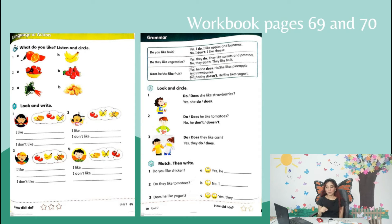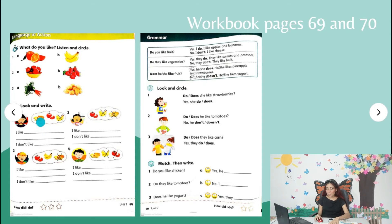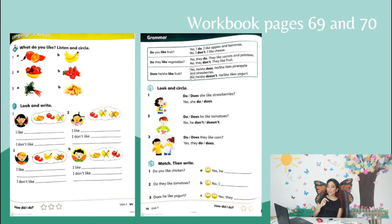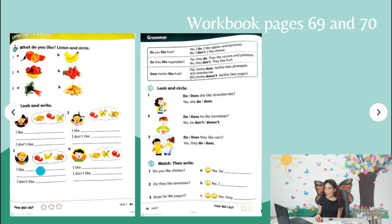Activity 7: Look and write. There's a girl and we have her thoughts. She has cheese, tomatoes — and bananas are crossed out. So the answer is: 'I like cheese and tomatoes. I don't like bananas' — because that one is crossed. You're going to do the same with the next ones — write 'I like' for the ones that are not crossed and 'I don't like' for the crossed ones.